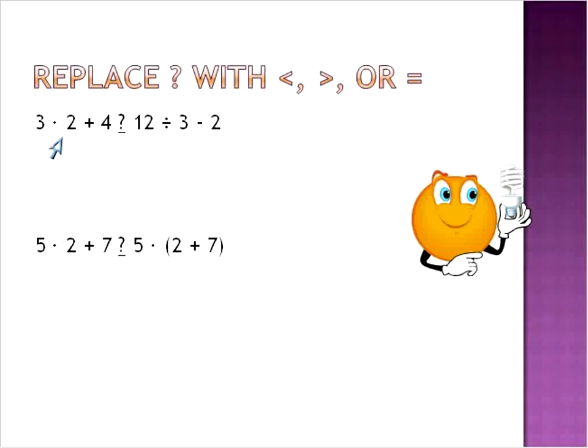To do that we're going to have to solve both sides here, these two expressions: 3 times 2 plus 4, and also 12 divided by 3 minus 2. And then after we've solved both sides, we'll be able to use our comparison - greater than, less than, or equal to. So let's go ahead and start with question number one.